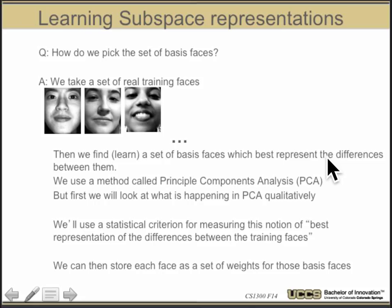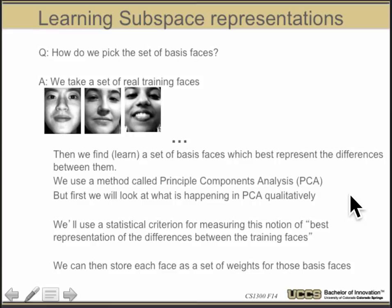The question then becomes: how do we pick the right set of basis faces? Given some real set of images, we want to find the best representation. To do this, we're going to use a technique called principal component analysis. Let's wind back and get a better feel for what the statistical criterion is for the best representation among training faces, which is why we're going to look at PCA.